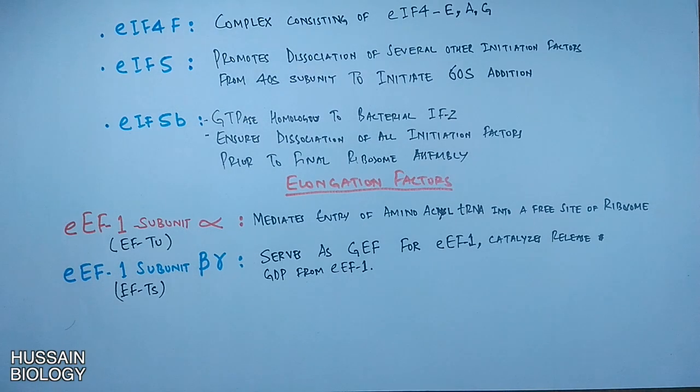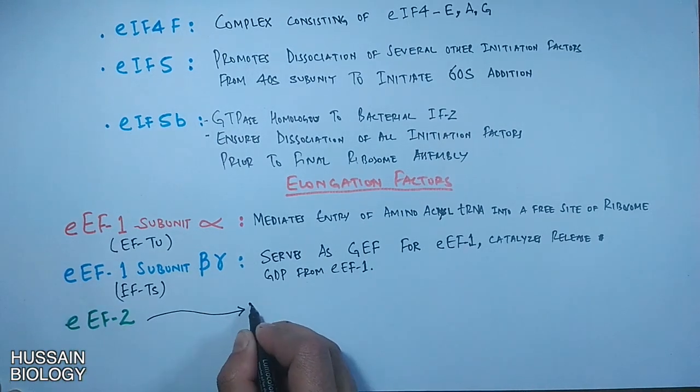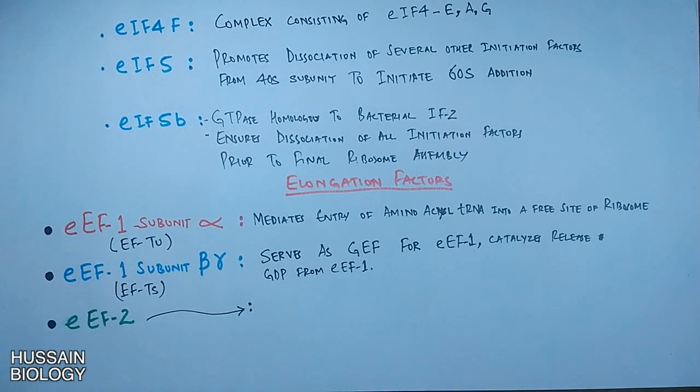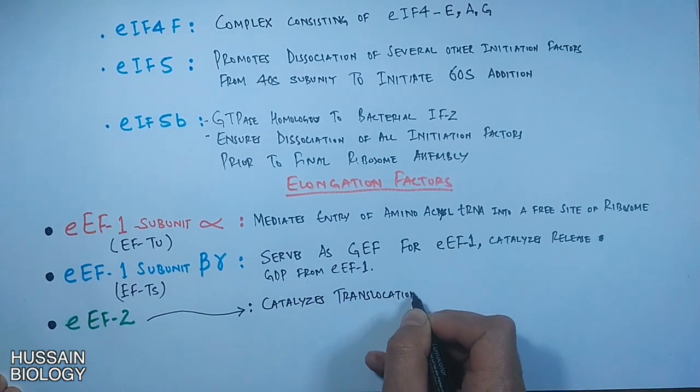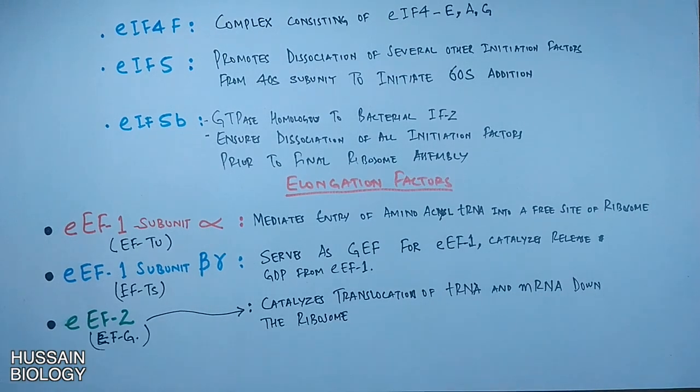Third elongation factor is EEF2, a functional analog of EEFG. It is a translocase enzyme which catalyzes the translocation of tRNA and mRNA down the ribosome. Now let's see what are the release factors.